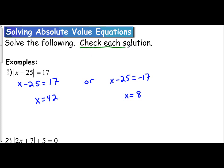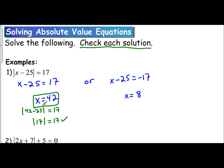The important concept is you have to check your solution, because there are times where you get a value that may not be true. If I take the absolute value of 42 minus 25, it should equal 17. 42 minus 25 is 17, and the absolute value of 17 equals 17 — yes. For x equals 8: absolute value of 8 minus 25 should equal 17. 8 minus 25 is negative 17, and the absolute value of negative 17 equals 17. So x equals 8 is also an answer.